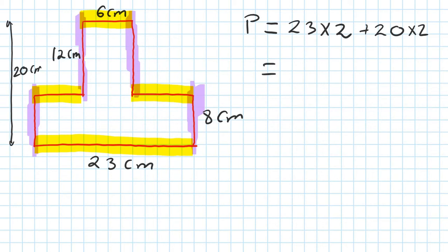So all I need to do is work it out like that and type it in my calculator. So 23 times 2 plus 20 times 2 - you will get 86 centimeters.